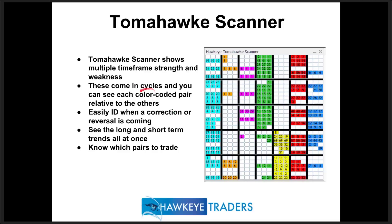We've introduced the Tomahawk Scanner, which shows multiple time frame strengths and weaknesses. Each column represents a currency pair, and each row is a time frame — one minute, two minute, three minute, 15, and 60 minute. For example, the Euro may be in trend against all six of its currency pairs on the one-minute chart, and as it flows into the two-minute chart, you can see the strength coming in. Conversely, when the Canadian Dollar goes out of trend against all its pairs, you can see that weakness flowing through.